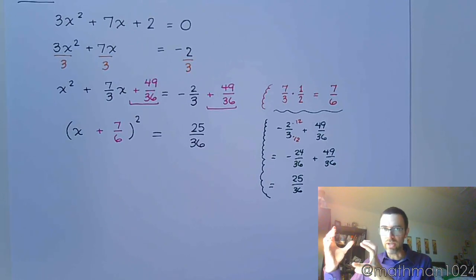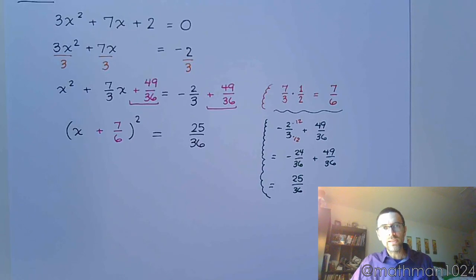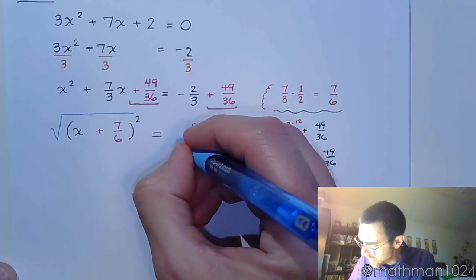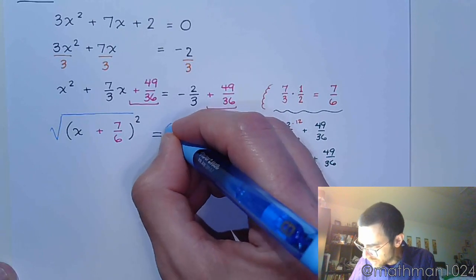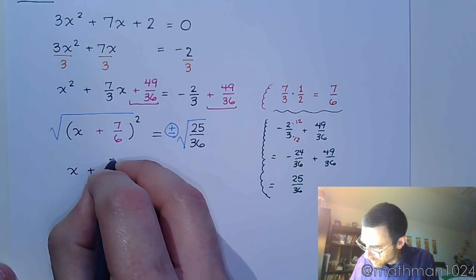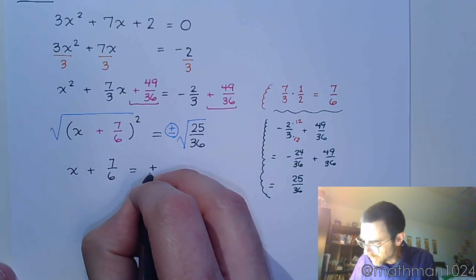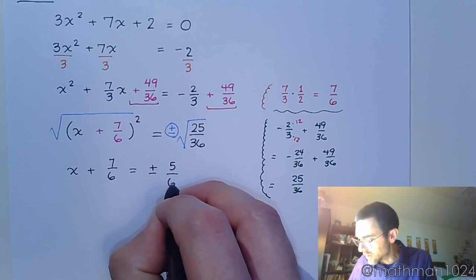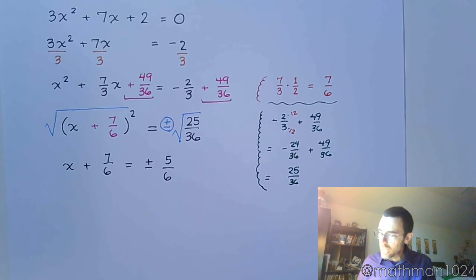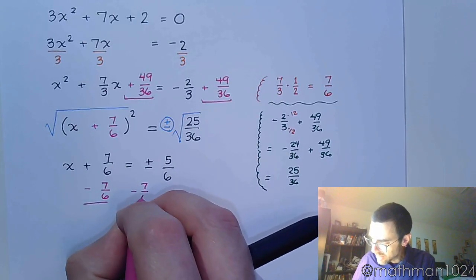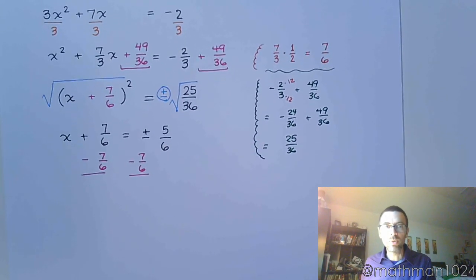We've created a perfect square on the left side and 25/36 on the right. Now it's set up to use the square root property — completing the square is just a vehicle to get you there. Taking the square root of both sides, and don't forget the plus or minus, the left side becomes x + 7/6. On the right side, the square root of 25 is 5 and the square root of 36 is 6, so we get ±5/6. Now move the 7/6 to the other side, placing it in front of the plus or minus.